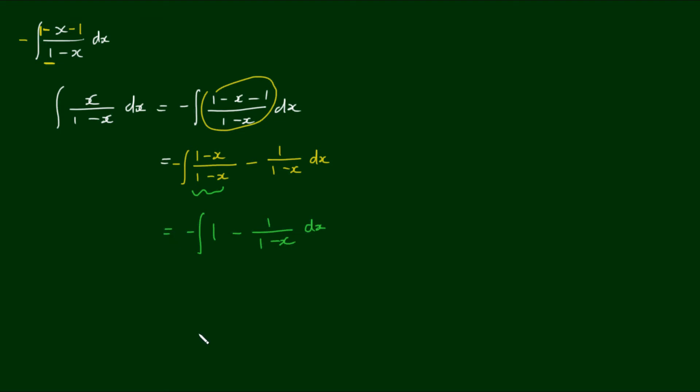And now we have two simple integrals that are familiar to us. Negative stays at the front, the first part, 1 just integrates to x minus the second part integrates to log of 1 minus x divided by negative 1. So divided by the derivative of the denominator.